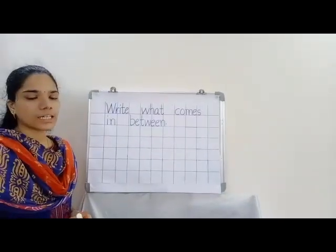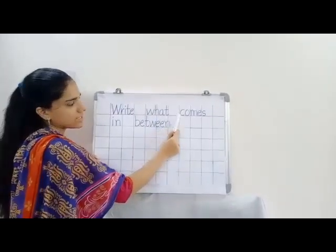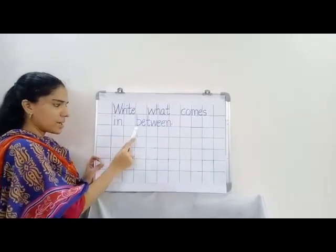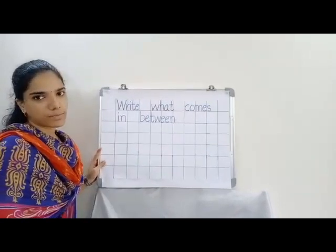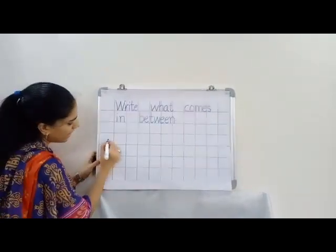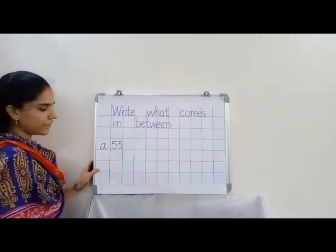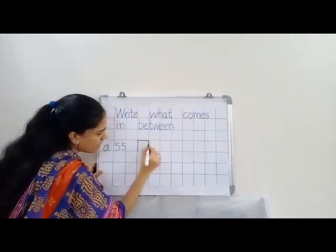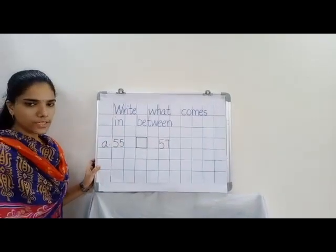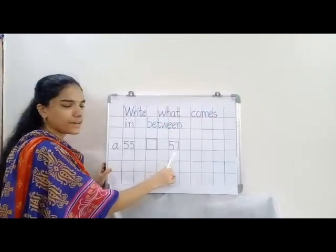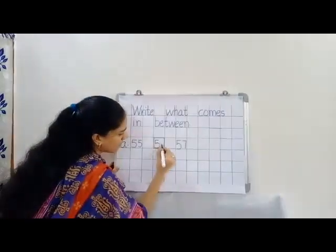Now children, let us see how to write between numbers. Write what comes in between. That means you have to write between numbers. Leave one line and write small a dot. Now here write 55, leave one box and draw one box, again leave one box and write 57. Now tell me children which number comes in between 55 and 57 children. In between? Yes, it is 56.